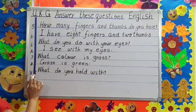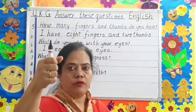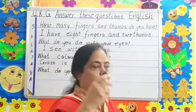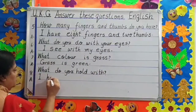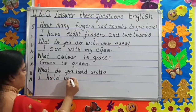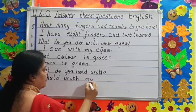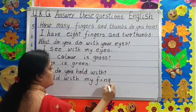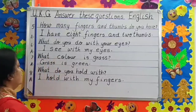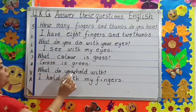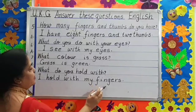Question number eight. What do you hold with? What do you hold with, children? I hold with my fingers. Full stop. Question number eight: What do you hold with? Question mark. I — capital — I hold with my fingers. Full stop.